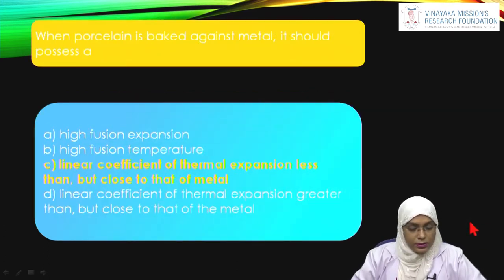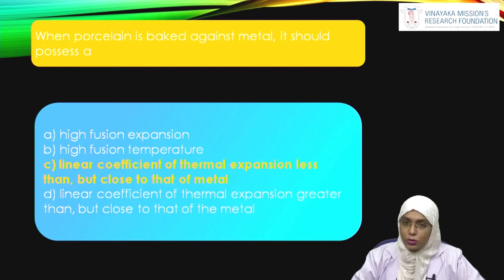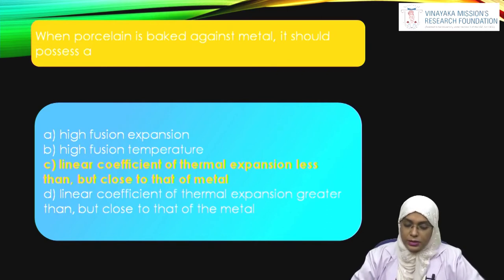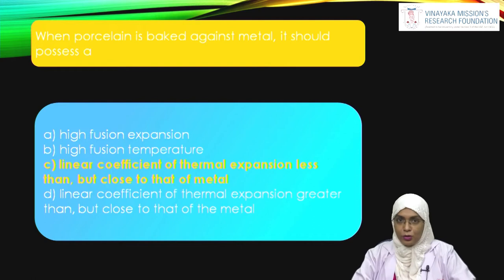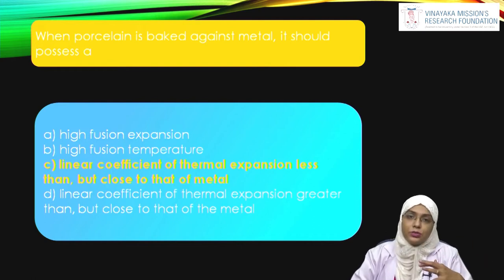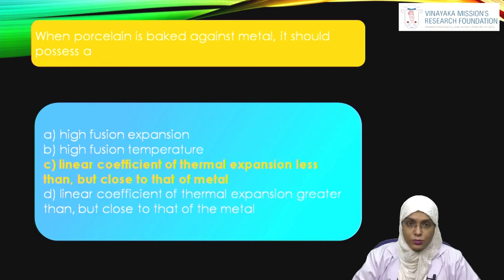Option D — minimize the number of porcelain firing cycles — yes, firing cycles should be as few as possible to increase strength, so that is a valid method. The answer for this question is option C. Another question: when porcelain is baked against metal, it should possess a linear coefficient of thermal expansion less than but close to that of metal — that is correct, option C. Option D, linear coefficient greater than that of metal, would be wrong, because the inner layer should have a higher coefficient than the outer layer.